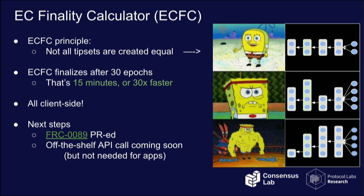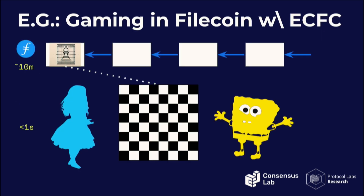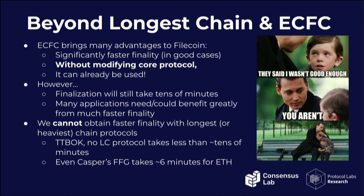We have filed the FRC in the Filecoin improvement proposal repo and want to provide this functionality directly at the API of Filecoin clients — though all the information is already available for applications to do their own analysis. The gaming platform no longer needs to spawn a layer 2, but 10–15 minutes is still too long for every chess move, so Alice and Bob would still want a state channel. The EC finality calculator is great because we don't need to modify the protocol, but it's still tens of minutes — ideally we'd get something better.